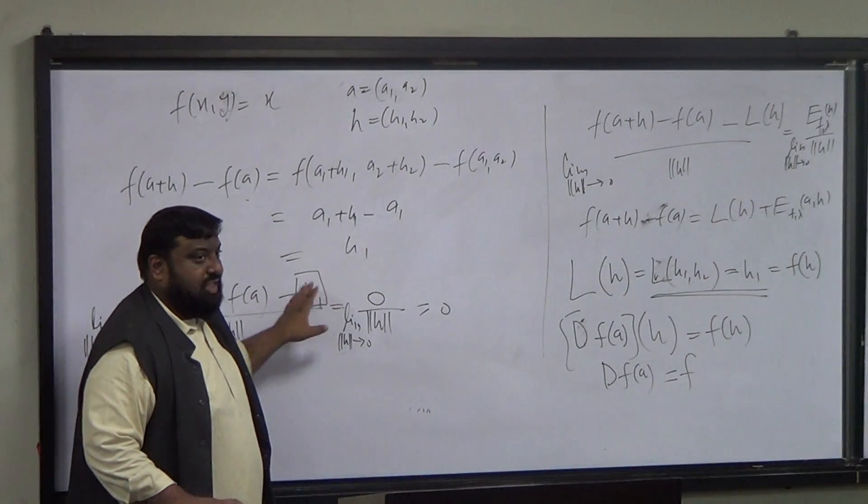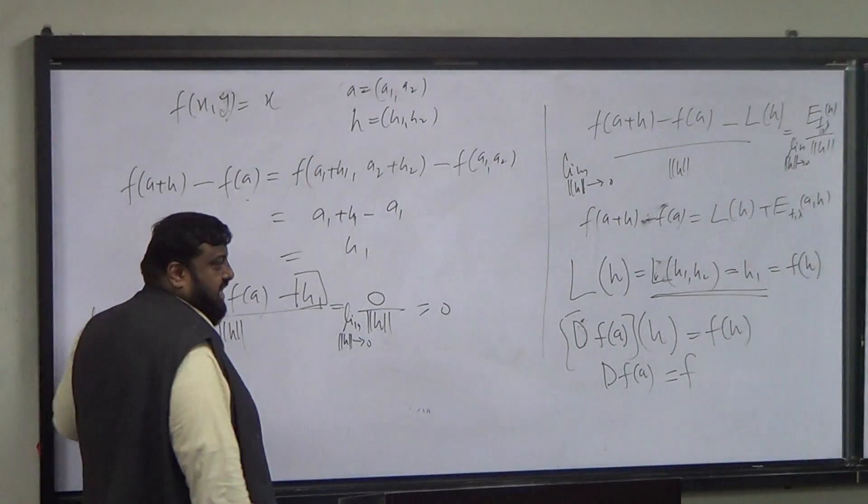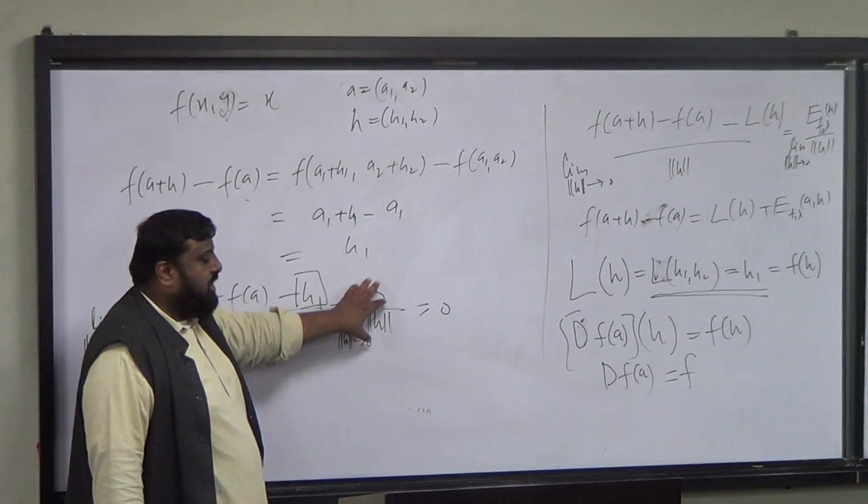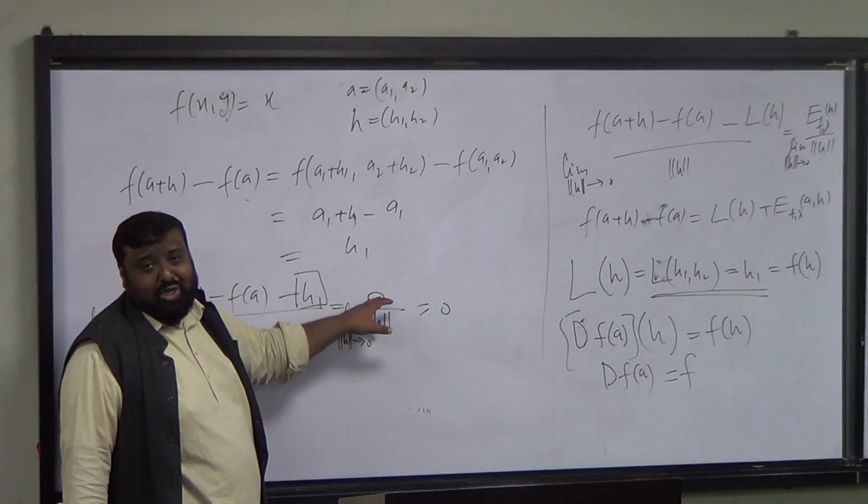I took H to the other side, divided by the norm of H, and took the limit as norm of H goes to zero. It turns out the expression on the other side is going to zero because it's already zero.